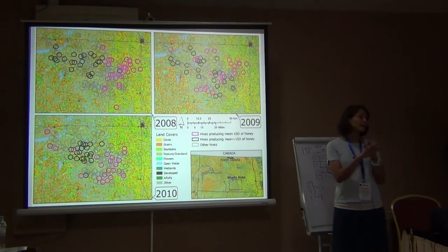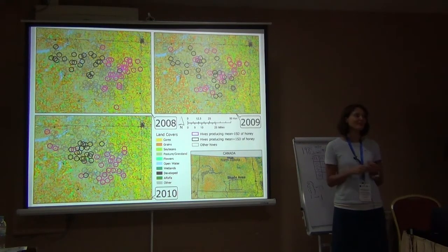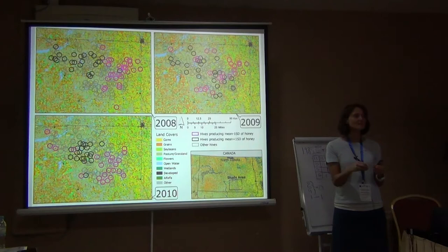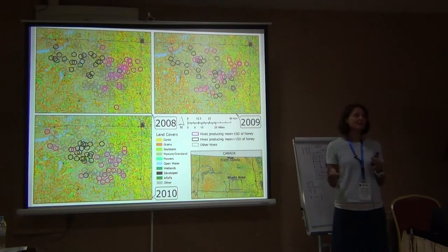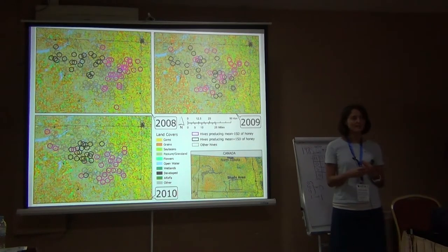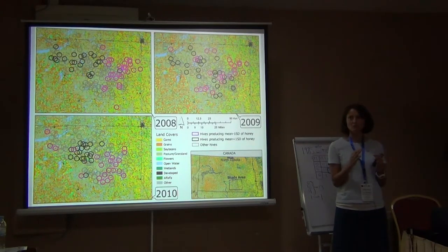Meanwhile, you would task the bee biologist with going to all of these different land covers and capturing validation data — using sweep nets and bee bowls to get in-field counts of bee abundance and species richness and maybe even pollen deposition. So you would have that validation data to check your model outputs against. And if you got good results, then you could probably apply this to broad areas in the region, assuming the biogeography doesn't change completely.